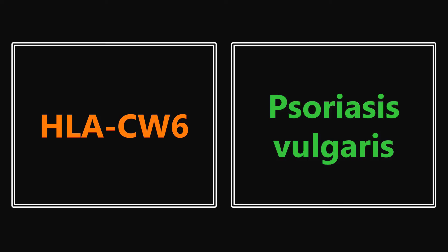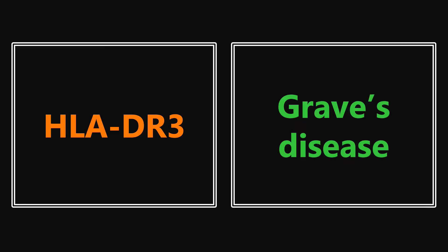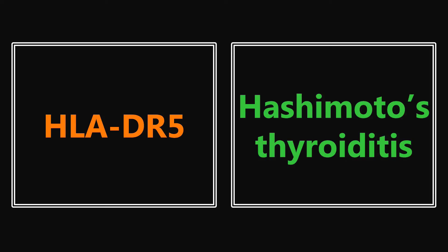HLA-CW6 is in reference to psoriasis vulgaris. HLA-DQ1 is pemphigus vulgaris — not the same as psoriasis vulgaris. HLA-DR3, if you see that in a question, they're most likely talking about Graves' disease — so there are a couple of different leukocyte antigens for Graves' disease. HLA-DR4 pops up pretty frequently and is going to be rheumatoid arthritis. HLA-DR5 will be in reference to Hashimoto's thyroiditis. These are commonly found in questions; there's a much bigger, more inclusive chart in First Aid, but these are the ones that commonly trip students up.